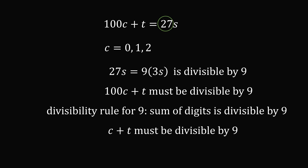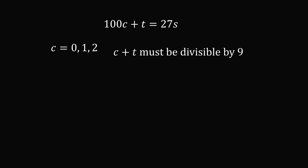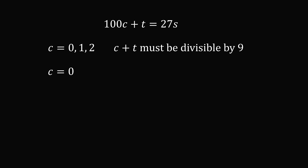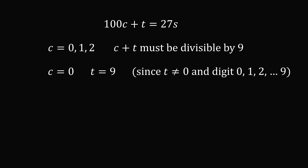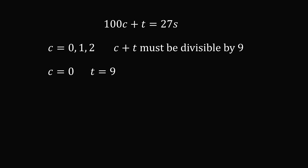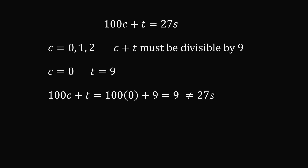Combining this with C being 0, 1, or 2, let's work through each case. Suppose C equals 0: we need C plus T to be divisible by 9, but C and T are different digits. This is only possible if T equals 9, since T cannot equal 0 (C is already 0) and T is a digit from 0 to 9. Then 100C plus T equals 9, which cannot possibly be a multiple of 27. So C equals 0 is eliminated.